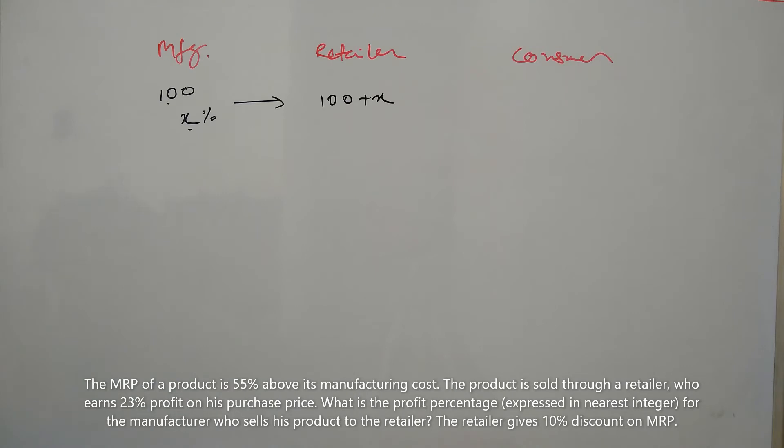The MRP for this product is 55% above the manufacturing cost. So the manufacturing cost is 100 rupees, so the MRP will be 155 rupees. This is the MRP for consumer.